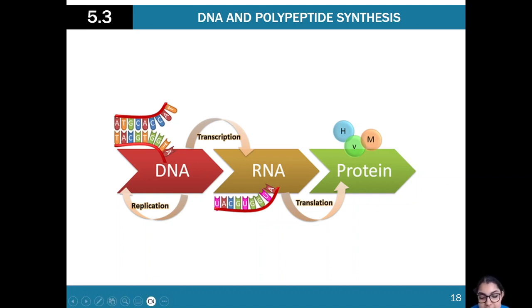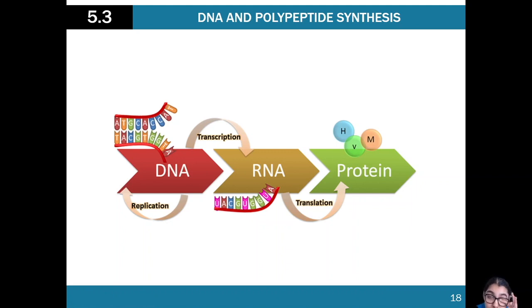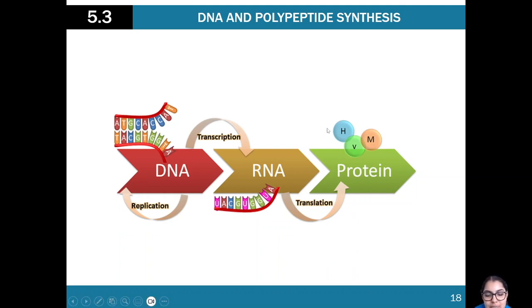We have DNA and we're going to use it for two processes. The first is transcription, where we change the DNA sequence from DNA to RNA. Once we have the RNA sequence, we translate it to make proteins. Think of transcription as writing down a recipe for a specific dish, and translation as actually cooking that recipe in the kitchen.